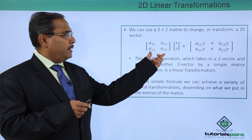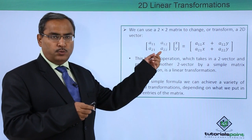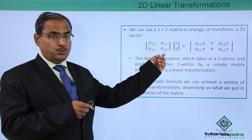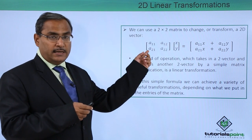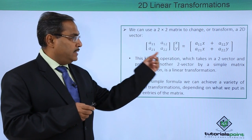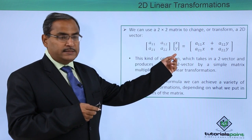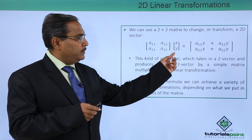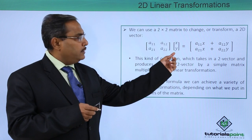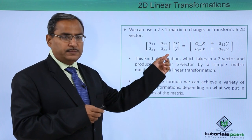Consider we have A11, A12, A21, A22. This is a 2 by 2 matrix, and x, y is a columnar matrix with size 2 by 1. Now if we do this multiplication,